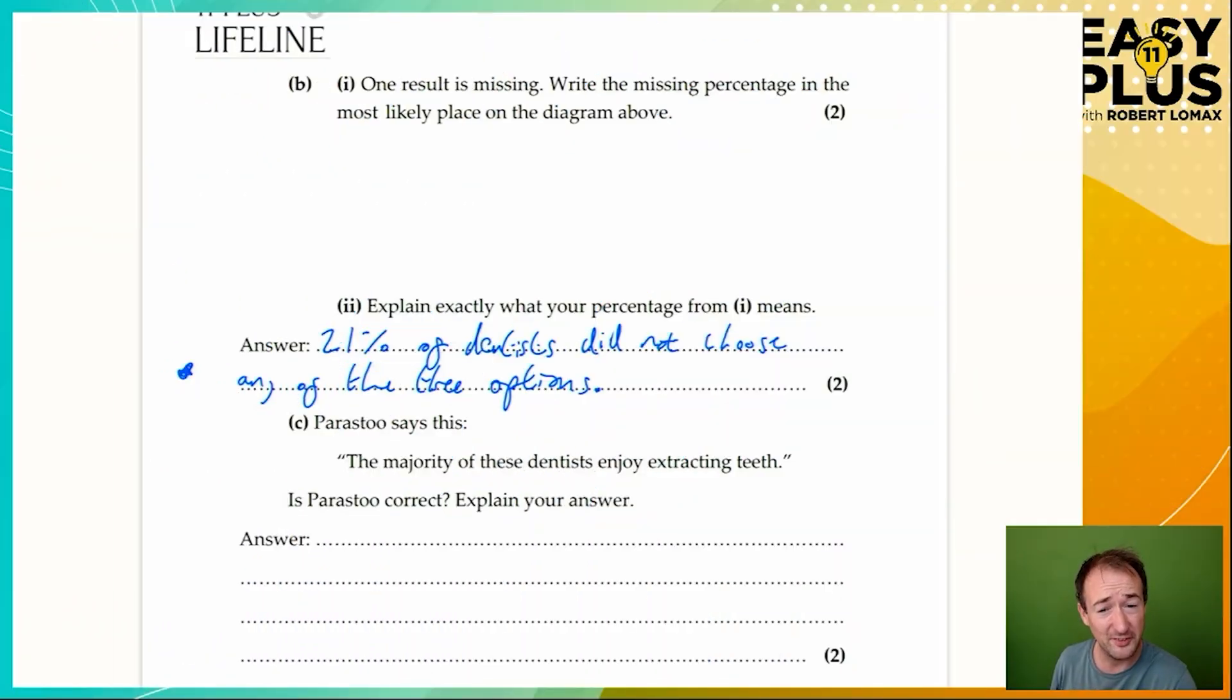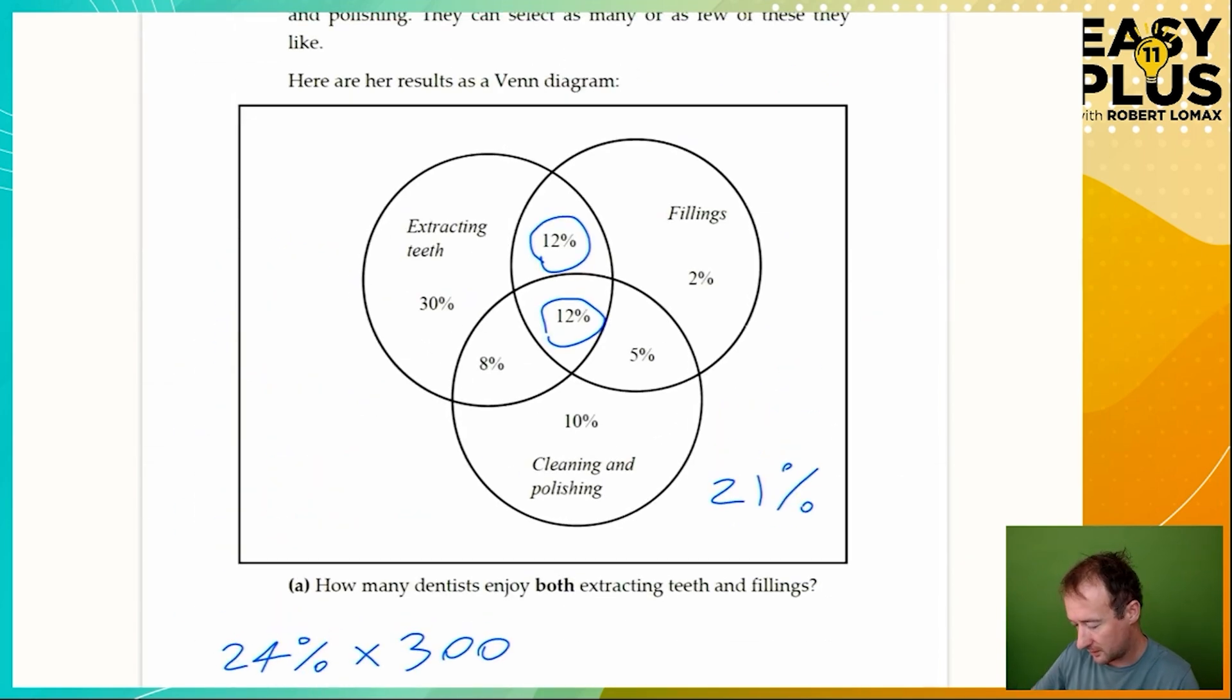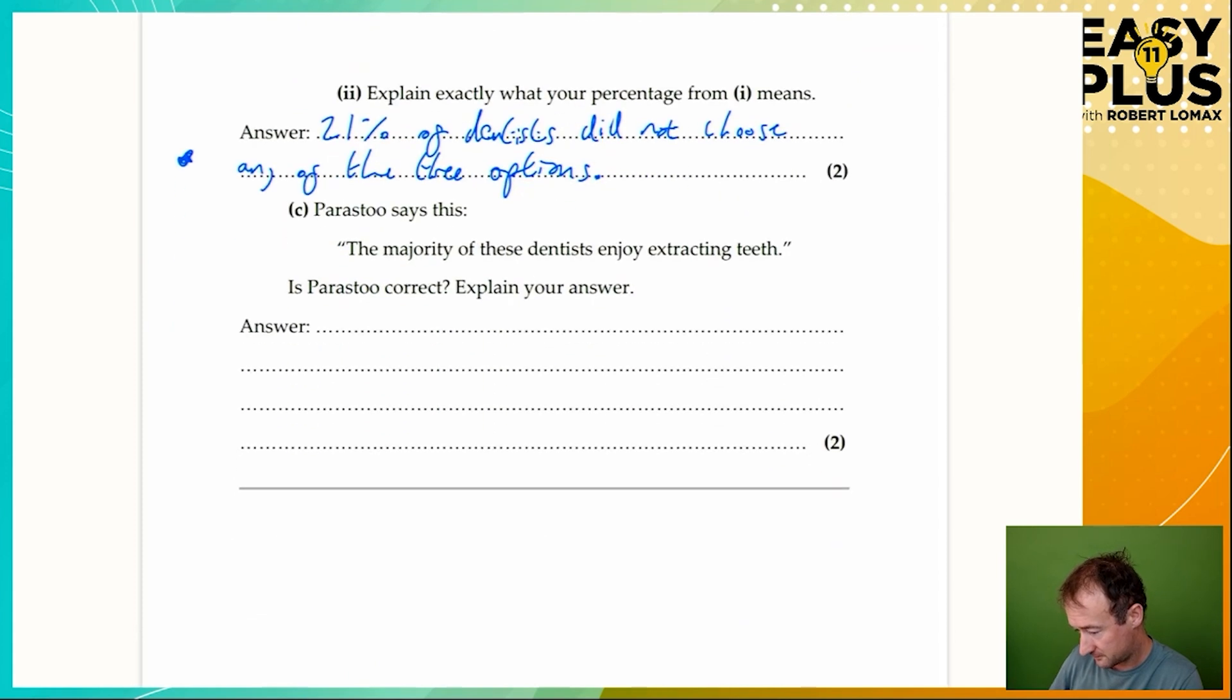Parastu says the majority of these dentists enjoy extracting teeth. Is she correct? Explain your answer. How many dentists enjoy extracting teeth? We've got 30 plus 12 plus 12, so that's 54, plus 8 is 62%. So 62% of the dentists say that they enjoy extracting teeth. A majority is anything more than half, anything more than 50%, so 62% is a clear majority. Yes, because 62% of dentists name extracting teeth as a favorite procedure.